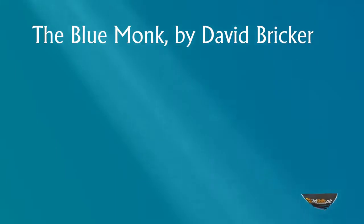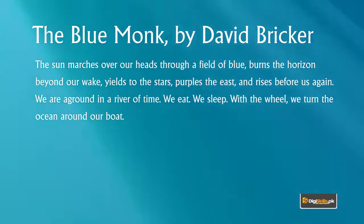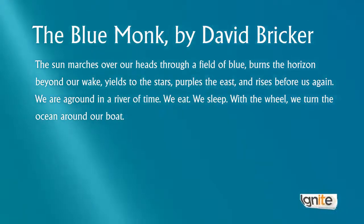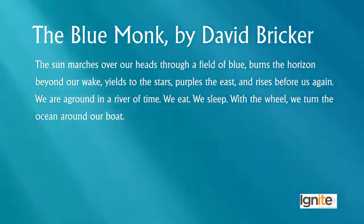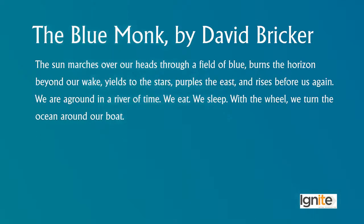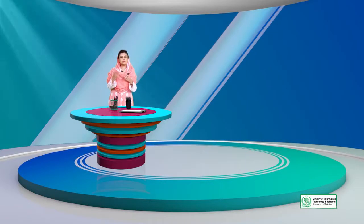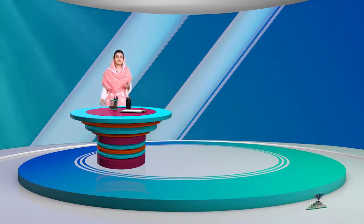The lines, as we normally read in a paragraph — if you read it in a short paragraph, the feeling will be completely different: 'The sun marches over our heads through a field of blue, burns the horizon beyond our wake, yields to the stars, purples the east, and rises before us again. We are aground in a river of time. We eat, we sleep. With the wheel, we turn the ocean around our boat.' So that's how the reader will also read it in their head when you write it in different paragraphs. These are interesting devices that you can use when you organize your text. We hope you can use these to your benefit. Thank you.